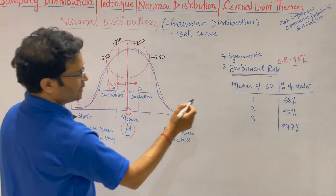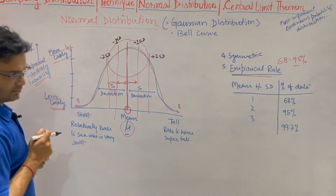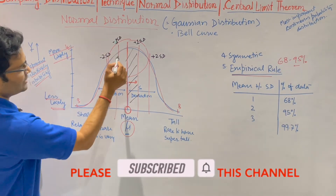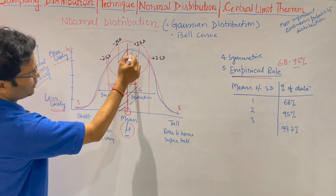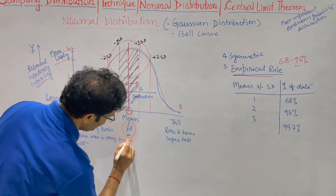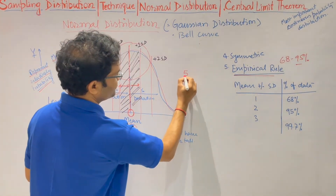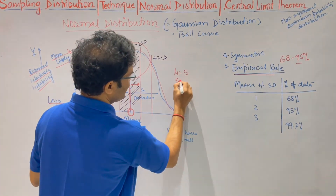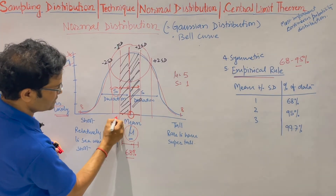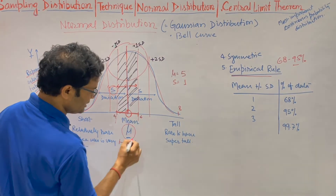The empirical rule says that if you go plus or minus 1, 2, 3 standard deviations from the mean — if you add 1 standard deviation to the mean, so this is plus 1 and minus 1 — the area highlighted in black is 68 percent. This data covers 68 percent. For example, if the mean height is 5 and the standard deviation is 1, then 5 plus 1 is 6 and 5 minus 1 is 4. So persons with height between 4 and 6 make up 68 percent of the population.